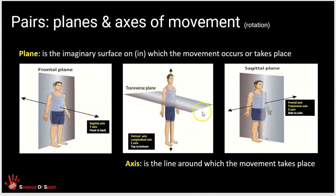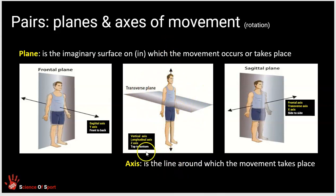The next plane is called the transverse plane. This grey shape divides the body into a top and bottom half. Movements here are rotational movements around the vertical axis or the longitudinal axis — it's the longest one. If you imagine a giant skewer down through this person, they would rotate around it. That would be movement in the transverse plane about the vertical or longitudinal axis. This axis can also be called the Z-axis.